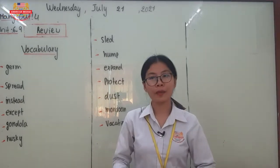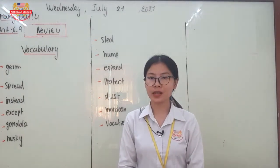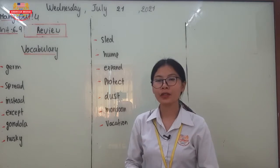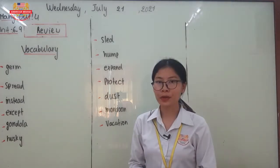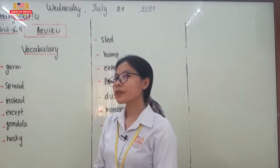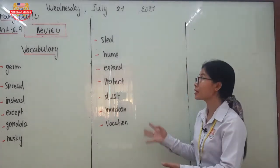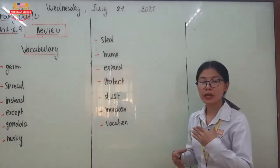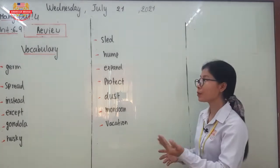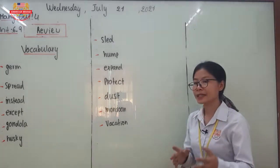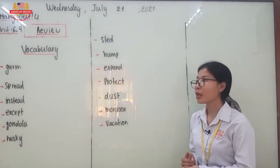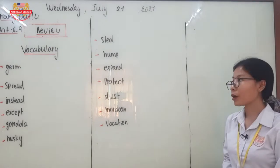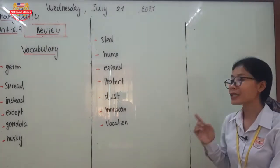Good morning everyone, welcome back to our online class from Amir Cambridge International School, Level 4. How are you this morning? Hopefully you are fine. Now let's move to our online class for the first session. Today you are going to learn about vocabulary review because today is Wednesday, July 21st, 2021. We will review vocabulary from Unit 6 until Unit 9, as yesterday you already reviewed from Unit 1 to Unit 5. All of the vocabulary are from the reading passages from Unit 6 until Unit 9.